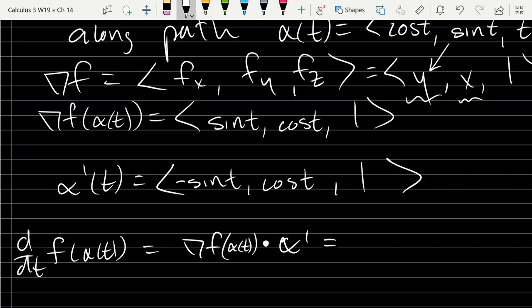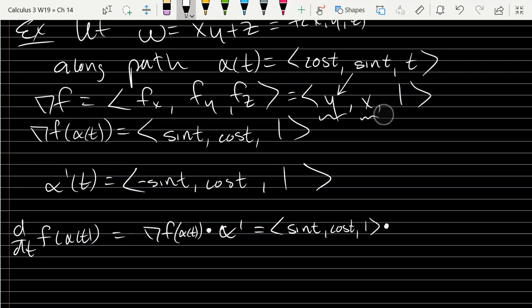So gradient of f of α(t), so that's <sin t, cos t, 1> dot <-sin t, cos t, 1>. So our derivative is -sin²t + cos²t + 1. You could do a little trig to turn this into just sine squares or just cos squares, but because it's not sin squared plus cos squared they're not going to just cancel out completely.